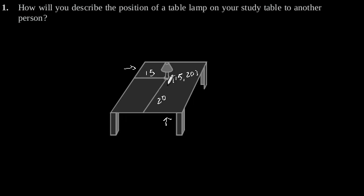Where the 15 represents the perpendicular distance of the lamp from the longer edge and 20 represents the perpendicular distance of lamp from the shorter edge.